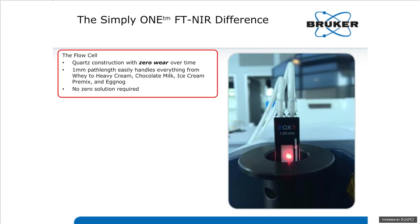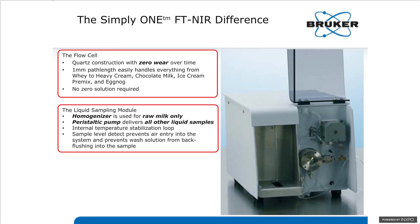The difference between the Simply One FTNIR system and other systems lies in three areas. First is the flow cell — compared with an FTIR spectrometer, the cell in the near-infrared is a quartz cell that doesn't wear over time. So it's not necessary to periodically bias calibrations to account for changes in the path length of a calcium fluoride cell used for the FTIR. The one-millimeter path length gives you much less resistance when pumping more viscous samples, so you can do everything from whey to heavy cream, chocolate milk, ice cream premix, and eggnog without diluting the sample. There's also no zero solution required for background measurements.